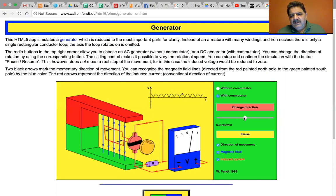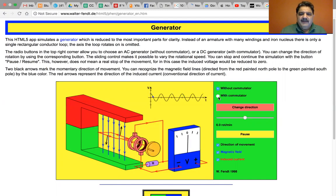So that's really the only thing you can do other than you can do without a commutator or with a commutator. And that changes the sinusoid into the one that is a bouncing hub. The only other thing you can do is change the rotation and change what you display, whether the magnetic field, the direction of motion, and the induced current.